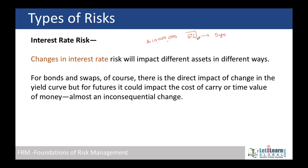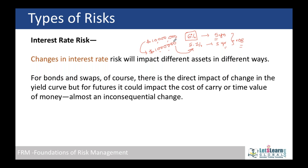If the interest rate later falls to 5.2%, a competitor formed recently will borrow at 5.2% for a similar five-year bond, while our company is still paying 6%. That difference of 0.8% on $10 million will have an impact on our earnings. Fluctuations in interest rates when borrowing or lending money affect earnings — this is called interest rate risk.